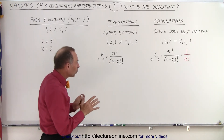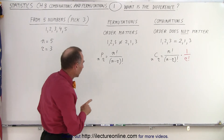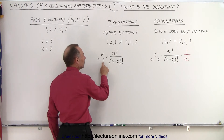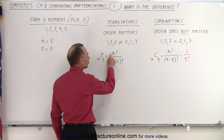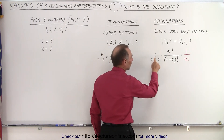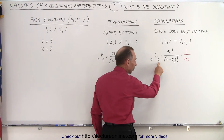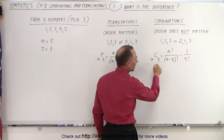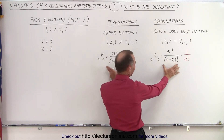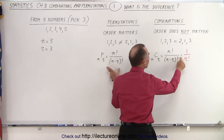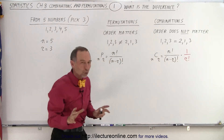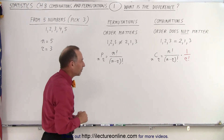So therefore we have two different equations. Notice they look somewhat similar. The number of permutations, given N numbers in the bag and R that I pull out, is equal to N factorial divided by (N minus R) factorial. The number of combinations is N factorial divided by (N minus R) factorial — that part is exactly the same — but in addition we multiply by one over R factorial. That is the difference between the two equations for permutations and combinations.